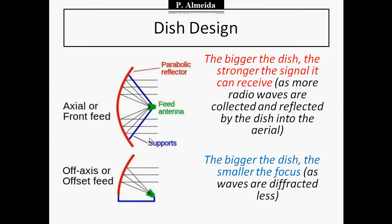However, the bigger the dish, the smaller the focus, as the waves are diffracted less. Because you have less diffraction, then the waves are not going to change direction as much or spread as much, so the focus is smaller, which again is going to make it more difficult as well when you're trying to get a good signal. So in terms of this design, you want to play around in between: what is the bigger dish I can get but still with a focus that is big enough for me to get enough of the waves being reflected.